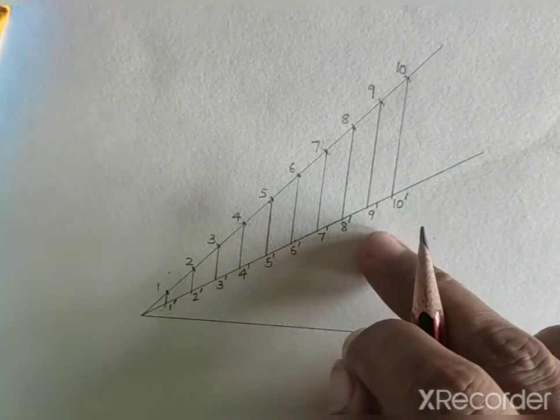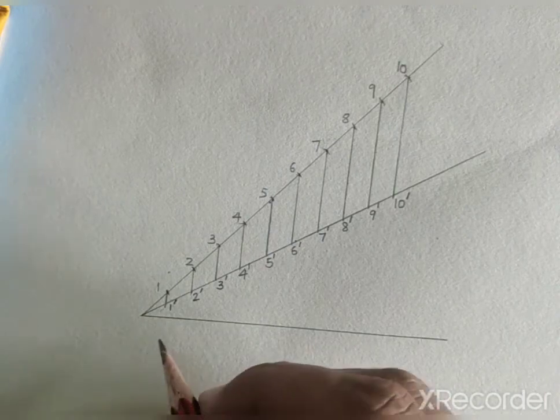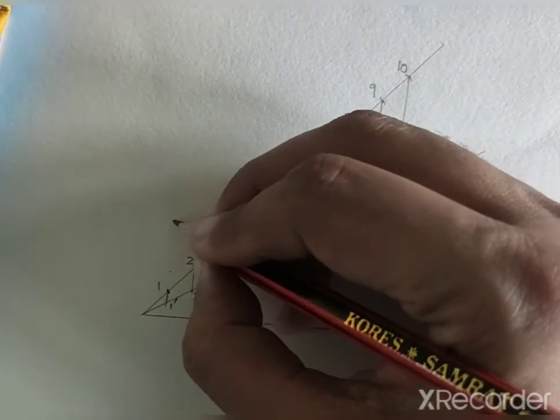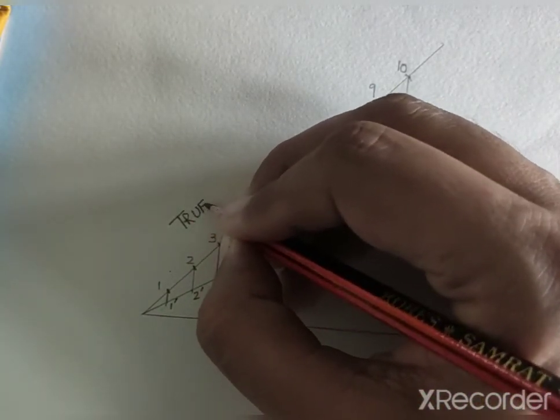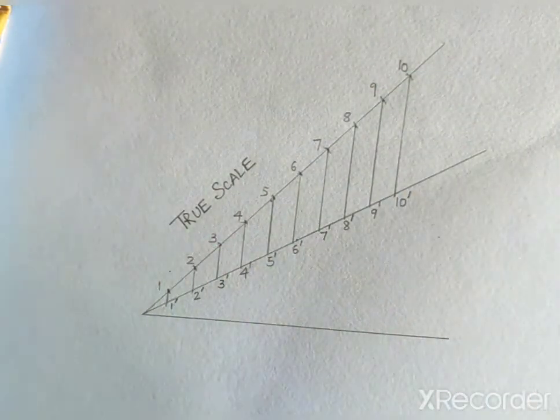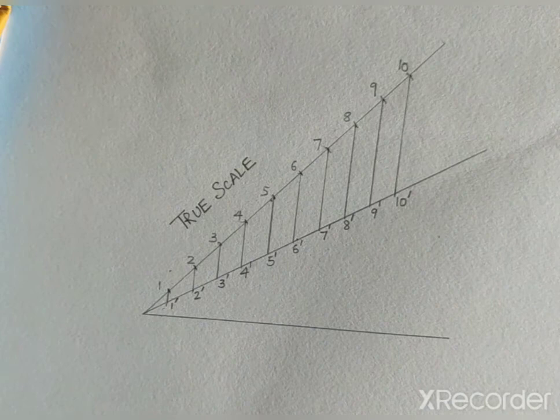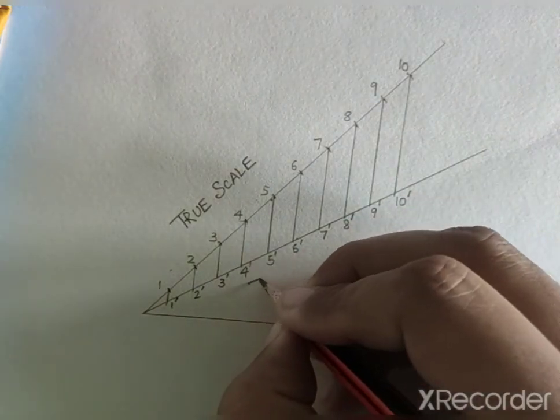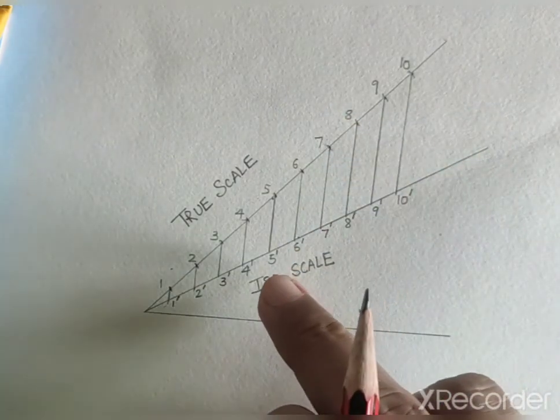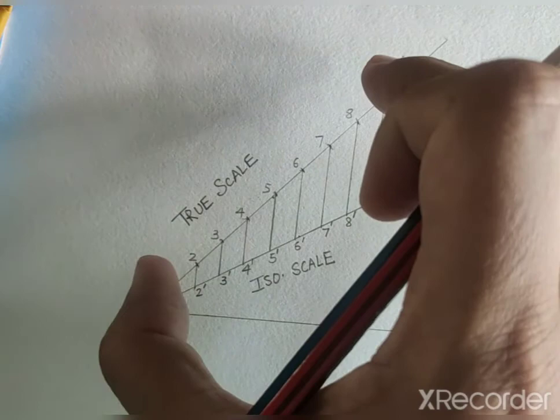So I have just changed their designation just to make the difference between the two. So this top line on the 45 degree angle, it is showing us the true scale or the actual scale which is 1 ratio 1. And this second line on 30 degree angle, the markings are showing us the isometric scale which are lesser than the true scale markings. So this scale is reduced than the true scale.